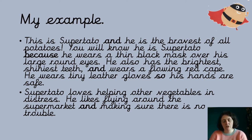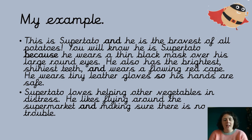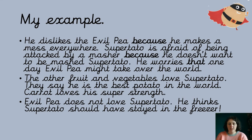Once I've finished talking about how he looks, I've then gone on to what he likes and doesn't like. 'Sue Potato loves helping other vegetables in distress' — I borrowed that from the story. 'He likes flying around the supermarket AND making sure there is no trouble.' You can see it's in proper sentences and I've used AND as well. Then I've carried on talking about what he doesn't like: 'He dislikes the evil pea because he makes a mess everywhere.'